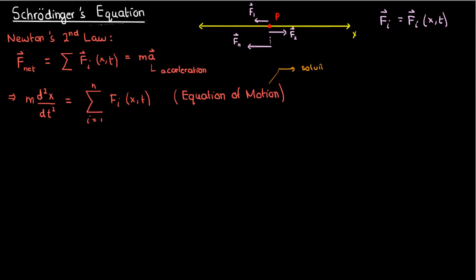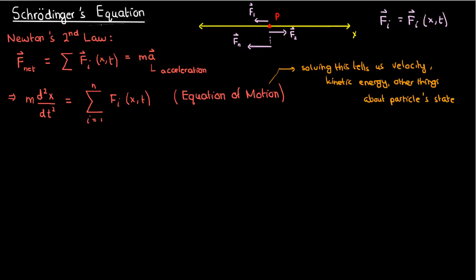Once we solve this equation for the particle's position, we could infer many things about the particle's state, such as its velocity, its kinetic energy, and so on. Sounds simple, right? Well, you'll be pleased to hear that quantum mechanics isn't that different.